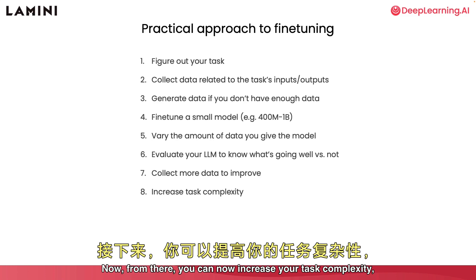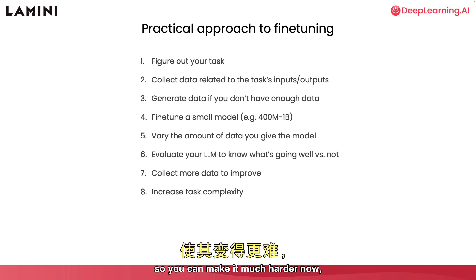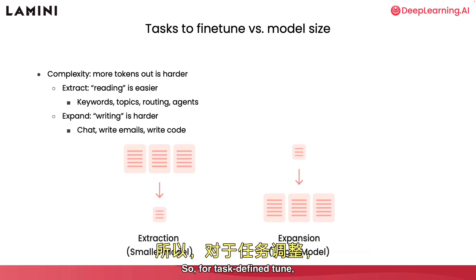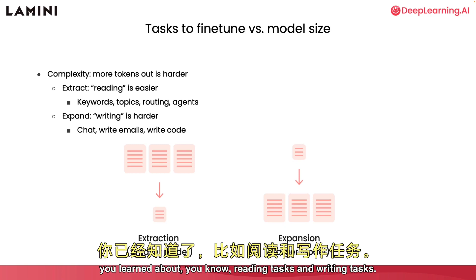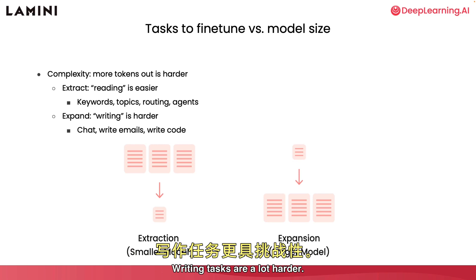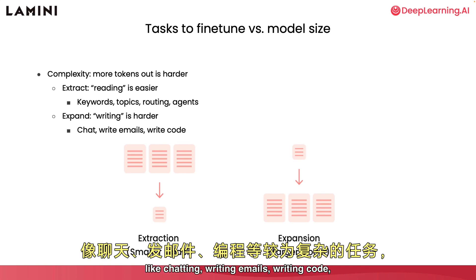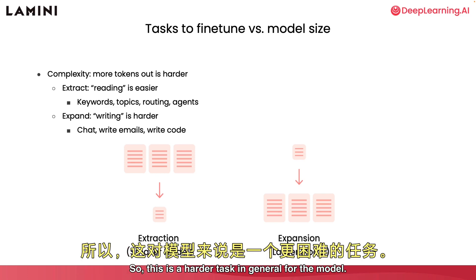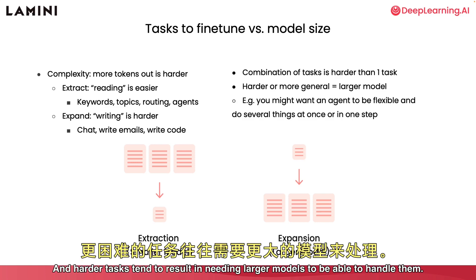From there, you can increase your task complexity — make it much harder — and then increase the model size for performance on that more complex task. Writing tasks like chatting, writing emails, and writing code are a lot harder because there are more tokens produced by the model. Harder tasks tend to result in needing larger models to handle them.